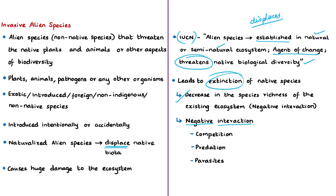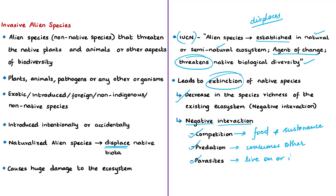Some of the negative interactions caused by invasive alien species include: competition with native species for food and sustenance, which may not allow coexistence; predation, where members of one species consume other species; and parasitism, where parasites live on or in a host species and depend on it for food and survival, adversely affecting the host — in this case the native species.